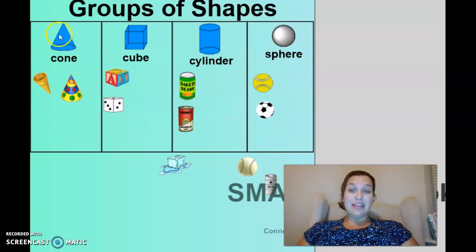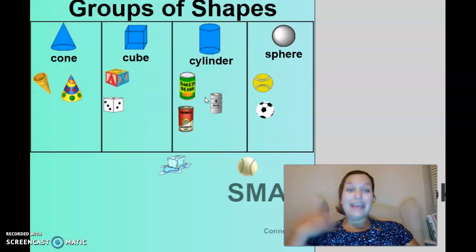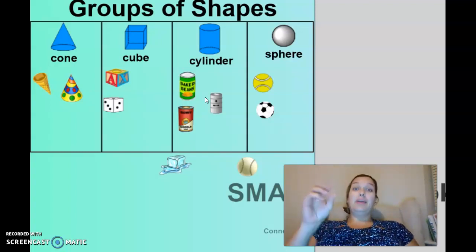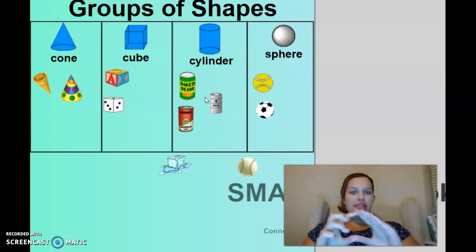Good job. This is a cone. We've got a point on top and a circular base on the bottom. Another what? Cylinder! And what two shapes are in our cylinder? Does anyone remember? Very good. We have the two faces, which are circles. And then what shape holds it together? A rectangle.